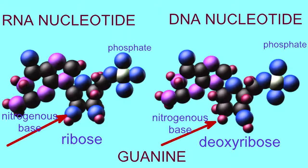RNA and DNA nucleotides of guanine are identical in their phosphate groups and their nitrogenous base guanine. However, they differ in the pentose sugar, with the RNA nucleotide possessing ribose with an oxygen attached to carbon number 2, and deoxyribose lacking this oxygen attached to carbon number 2.